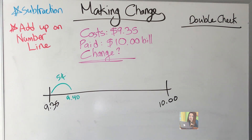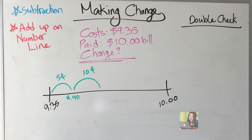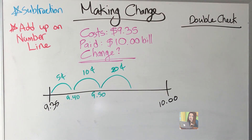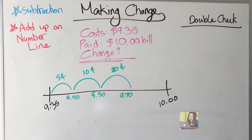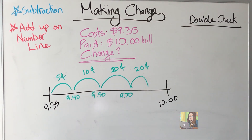Now I need to keep adding until I get to ten. Let's add ten cents — nine dollars and forty cents plus ten more cents gets us to nine dollars and fifty cents. Now I'm going to add twenty cents: fifty plus twenty is nine dollars and seventy cents. Not quite there, so I'll add another twenty cents — that gets me to nine dollars and ninety cents. I'm only ten cents away, so I add one more ten cents and now I've made it to ten dollars.